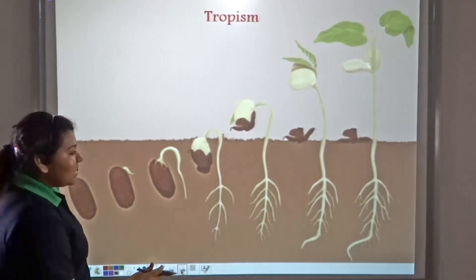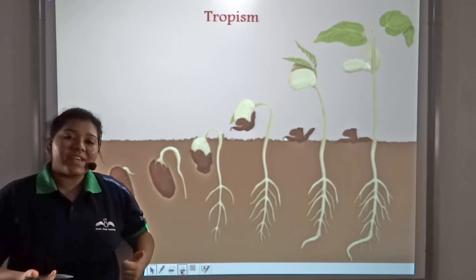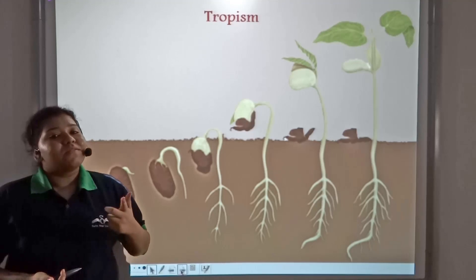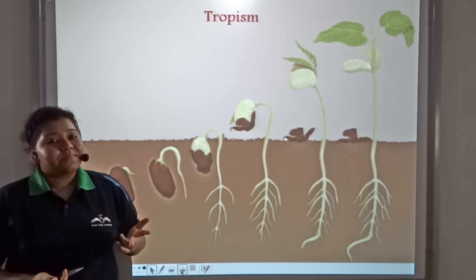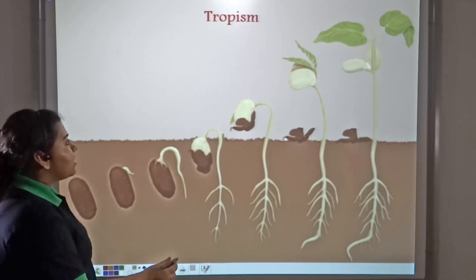This directional movement of plants is triggered by different environmental factors such as light, water, or gravity. This directional movement is known as tropism.